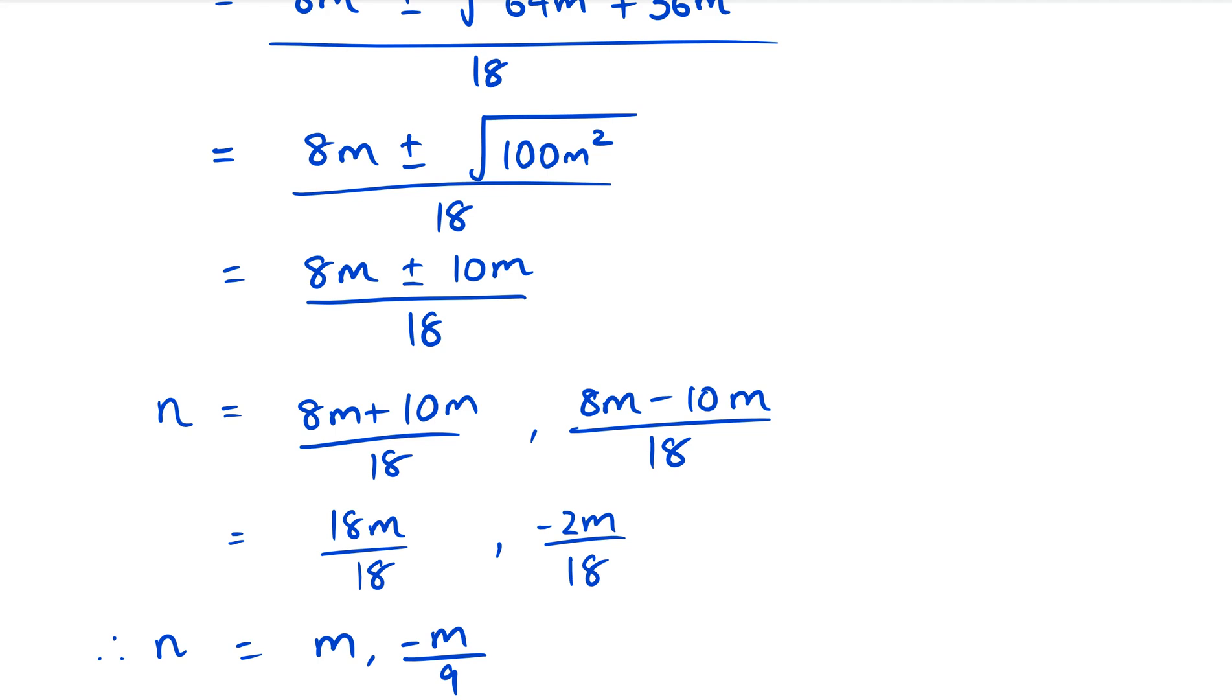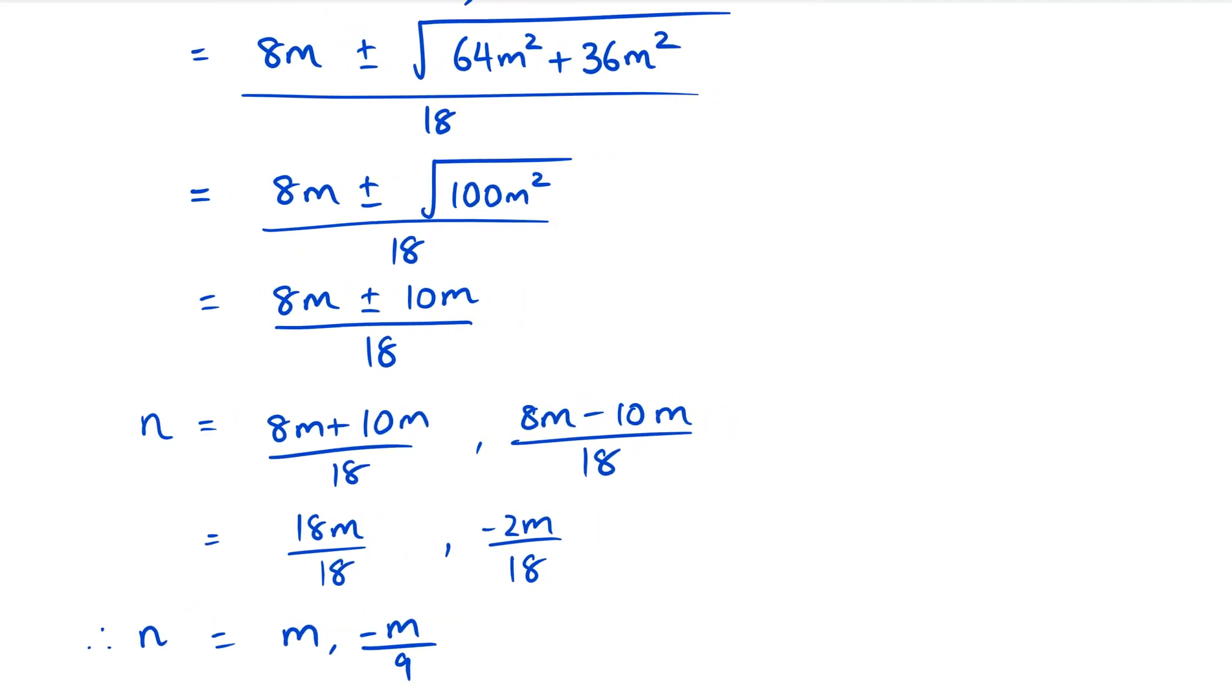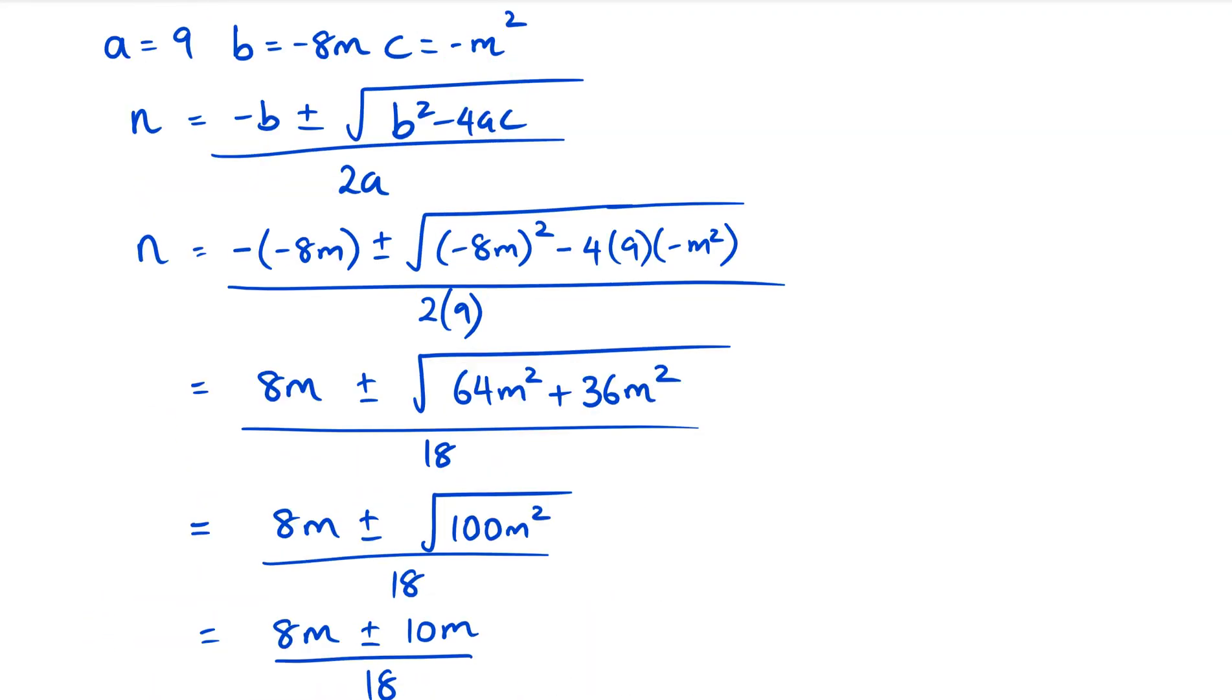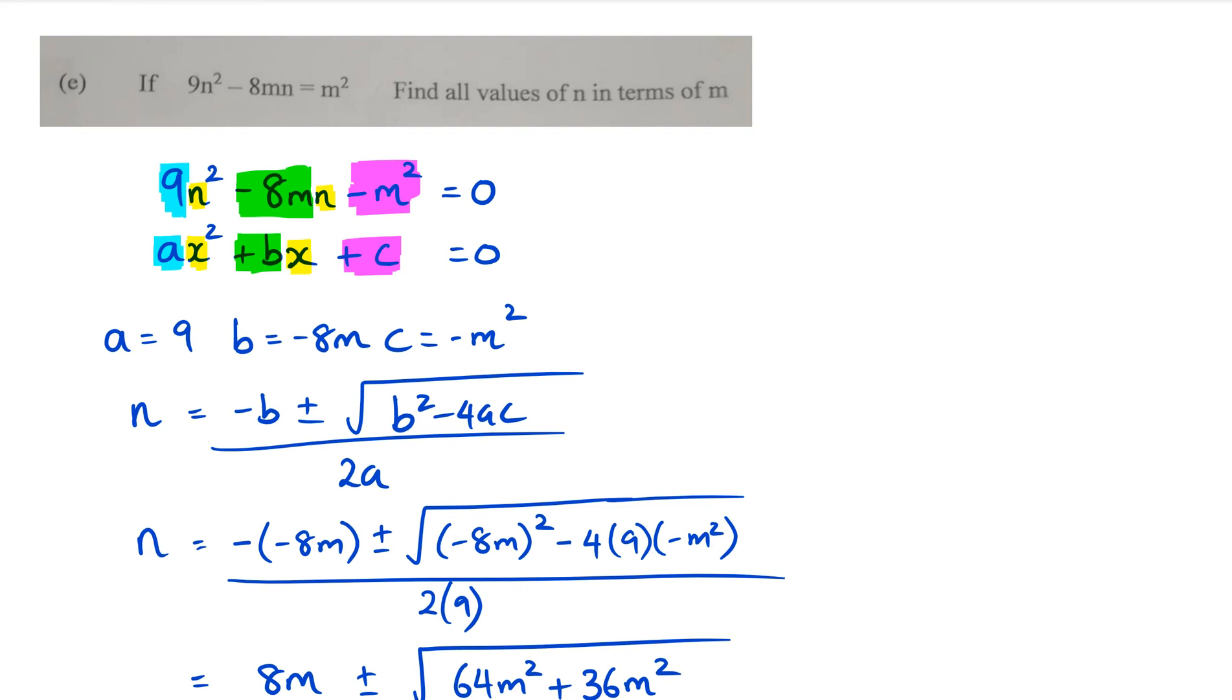So we can finally say therefore n equals m or negative m over 9. So those are our two answers for n in terms of m. This is actually using the quadratic formula to solve this. Now as I said at the start, if you had actually seen the pattern then you can just factorize it straight away. This kind of pattern recognition comes only from doing a lot of these questions.